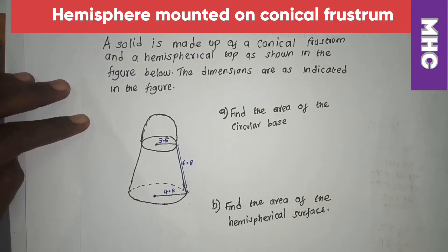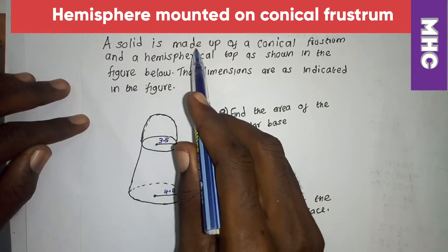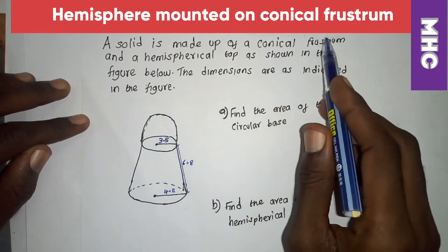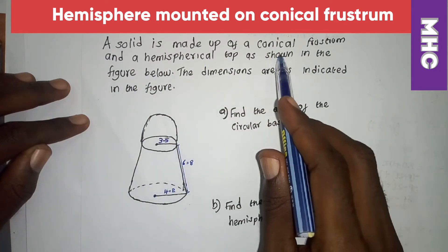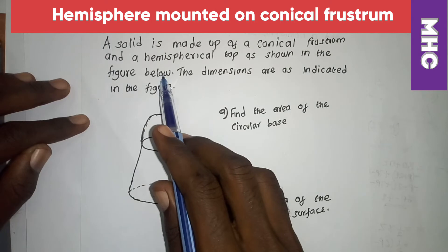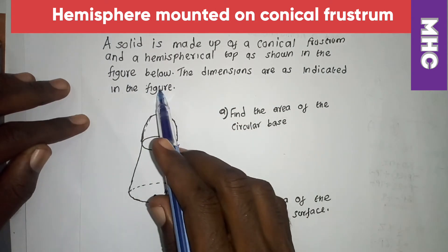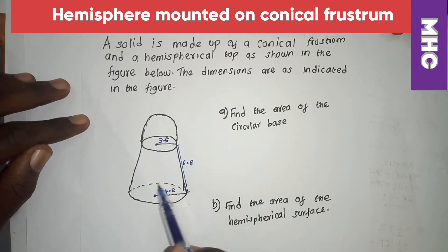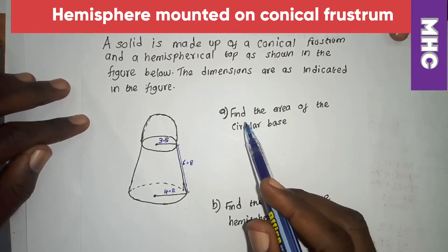Assalamualaikum warahmatullahi wabarakatuh, welcome to our channel. Today we are going to look at this question which states that a solid is made up of a conical frustum and a hemispherical top as shown in the figure below. The dimensions are indicated in the figure.